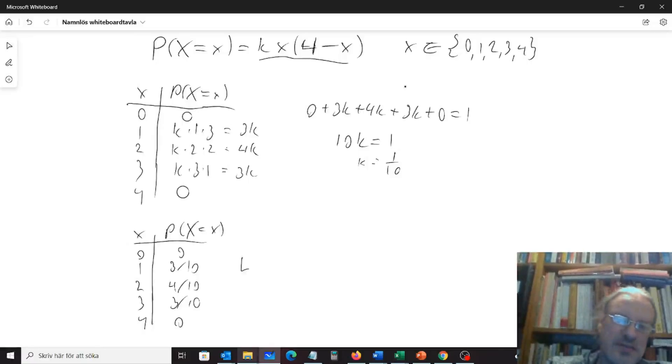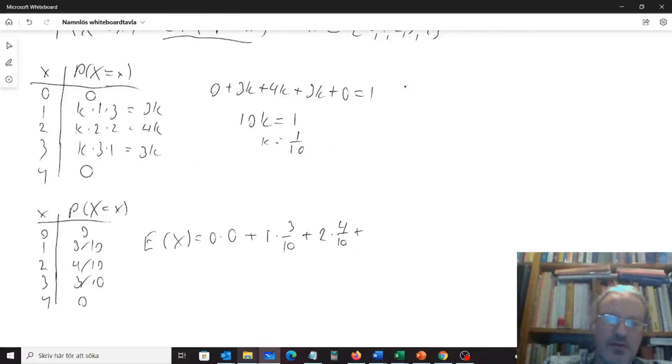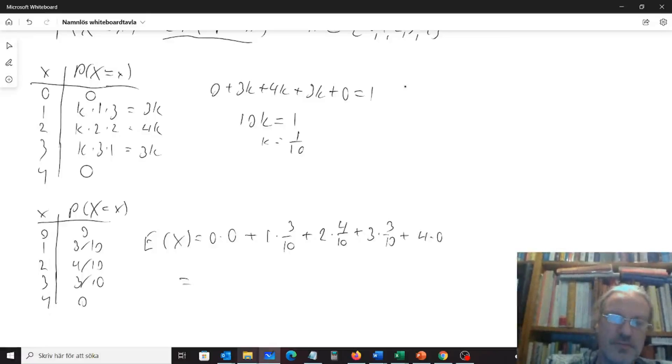But we can calculate that also. So the expected value of our random variable X would now be 0 times 0 plus 1 times 3 tenths plus 2 times 4 tenths plus 3 times 3 tenths plus 4 times 0. So that will give us 3 tenths plus 2 times 4 is 8 tenths plus 3 times 3 is 9 tenths. So what does this give us? That will give us 20 tenths, which is 2.